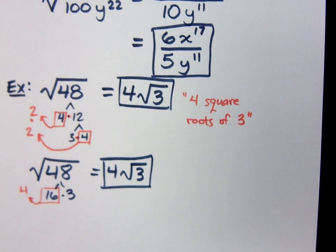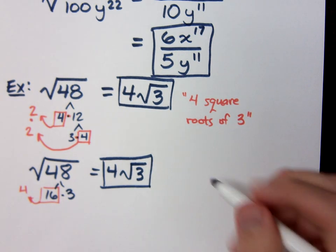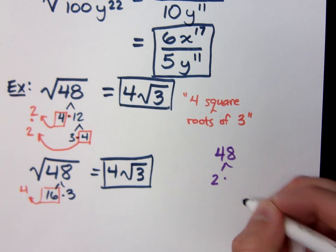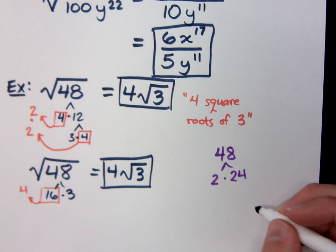Even better than that, because I know sometimes we don't think about how we can break down 48, we get kind of confused, and I don't want to start with a small number. Sometimes you can do that. If I look at 48, I know that 2 goes in there because it's even.